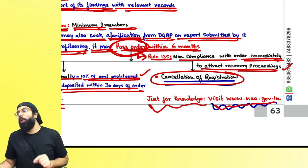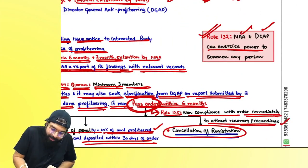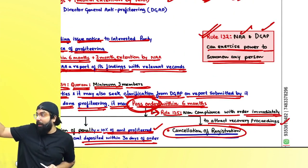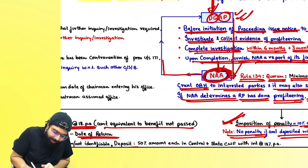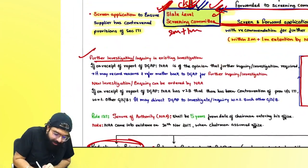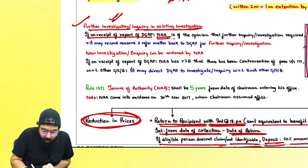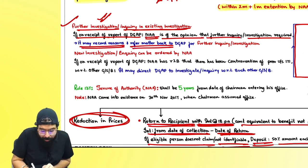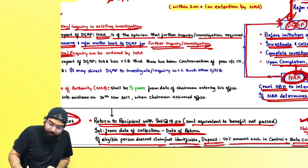The National Anti-Profiteering Authority and DGAP can exercise the power to summon any person — they can call anyone. Also, can the case be referred back to DGAP? Yes — for further investigation or inquiry. If on receipt of the DGAP report, the NAA is of the opinion that further inquiry or investigation is required, it may record reasons and refer the matter back to DGAP for further inquiry or investigation.